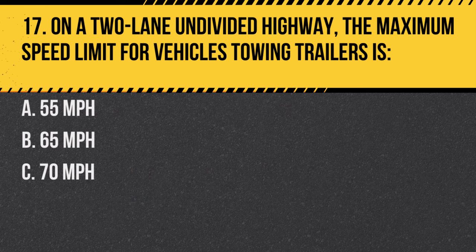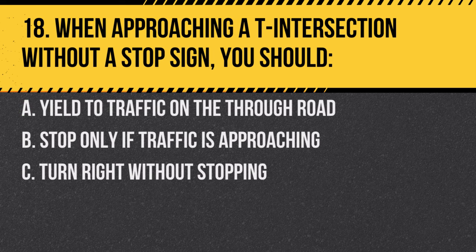Question 17. On a two-lane undivided highway, the maximum speed limit for vehicles towing trailers is: a. 55 miles per hour. b. 65 miles per hour. c. 70 miles per hour. Answer: a. 55 miles per hour. This is a safety measure due to the added difficulty of towing.